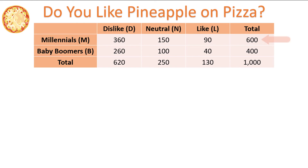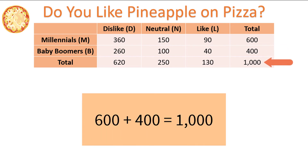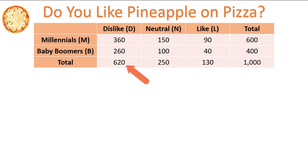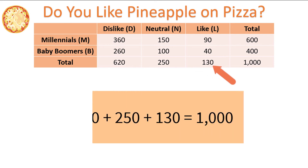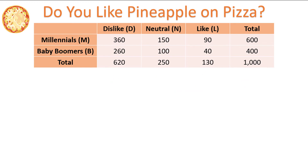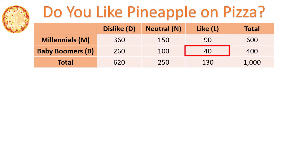We can see from the table that there are 600 Millennials and 400 Baby Boomers. These two numbers add up to the total number of people surveyed, which is 1,000. 620 respondents disliked pineapple on pizza, 250 were neutral, and 130 like pineapple on pizza — these three numbers also add up to 1,000. Any of the cells inside the boxed region represent intersections of levels of the two variables. For example, one cell shows 360 Millennials who dislike pineapple on pizza, and another cell shows 40 Baby Boomers who like pineapple on pizza.